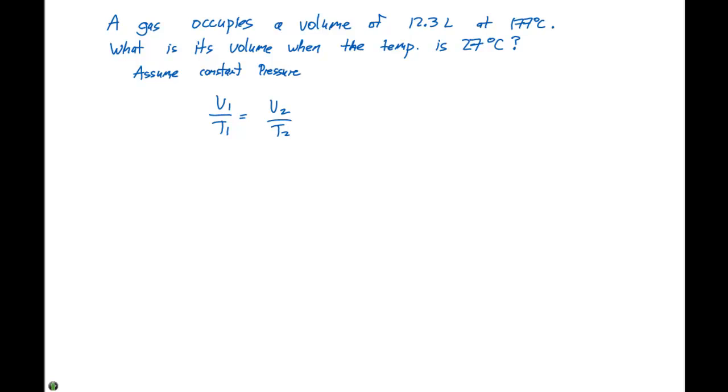If we wanted to express this as a combined gas equation, we would say P1 V1 over T1 equals P2 V2 over T2. But if we have constant pressure, the P1 and P2 are going to cancel out. So let's look at what we have here.